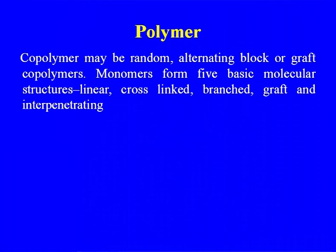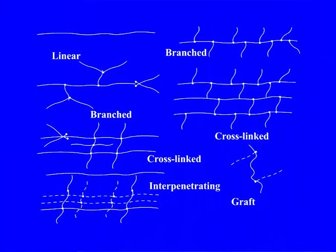Monomers form five basic molecular structures: linear, cross-linked, branched, graft, or interpenetrating — various combinations may be present in polymer structure. These are the linear, branched, cross-linked, interpenetrating, and graft types of polymers.